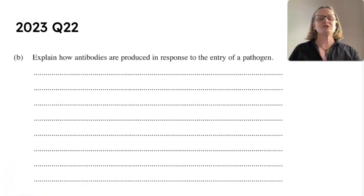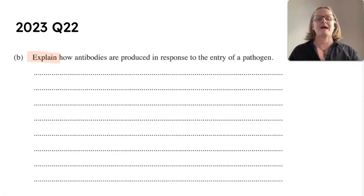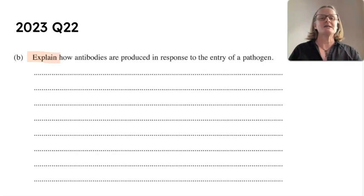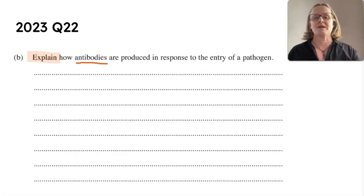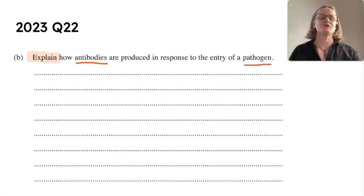Part B for this question was an explain. Explains require you to think about cause and link it to effect — so how and why things happen. In this question we are still in module 7 and we're looking at antibodies and how they are produced. Some of the key words you're going to need to use are things like B cells and T cells, because they are the white blood cells involved in the production of antibodies and the response when a pathogen enters. Pathogens obviously have antigens on them — those are the foreign markers on the surface. Those are the key words you'll want to include in what is going to be quite a long, four-mark answer.